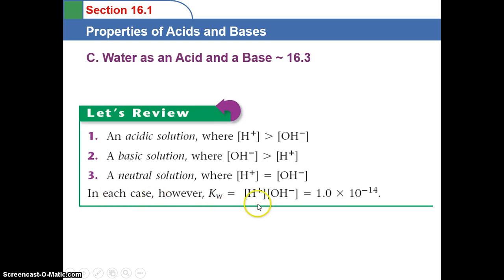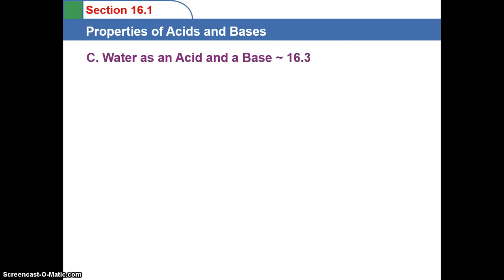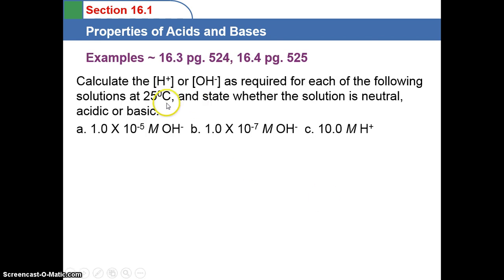Remember that the hydrogen ion concentration multiplied by the hydroxide ion concentration is always equal to 1 times 10 to the negative 14th at 25 degrees Celsius, and that's the circumstance we have now. So, we can do a really easy math problem with this example.